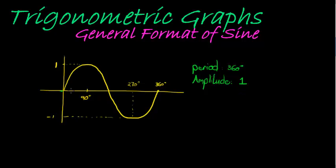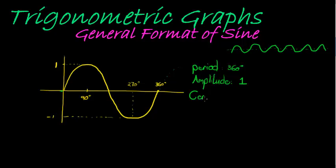Another thing I didn't mention: notice that there is a center line, a line that passes through the center of this graph. This graph continues forever in both directions — to the left and to the right — doing the exact same thing. Through the whole graph there is a line that cuts it right in the center that I like to call the center line. Here, the center line is just the x-axis, or the line y is equal to 0.